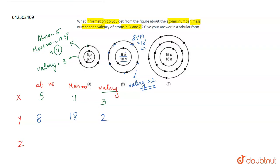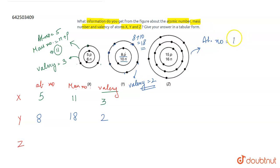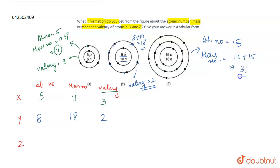Talking about Z: the atomic number of Z is 15, because the number of protons is 15. The mass number is 16 plus 15, which equals 31. So the mass number for Z is 31.